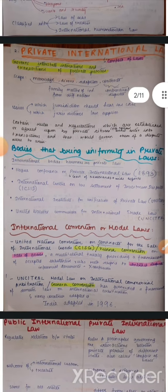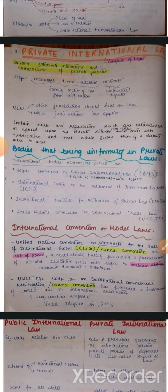There are some bodies — as given in your textbook, page 191 — bodies that bring uniformity in private laws, also called international bodies that harmonize private laws.